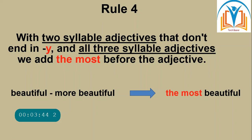Rule four: with two-syllable adjectives that don't end in -y, and all three-syllable adjectives, we add 'the most' before the adjective. For example, beautiful doesn't end in -y, so we say beautiful, more beautiful, the most beautiful. We add 'the most' here.